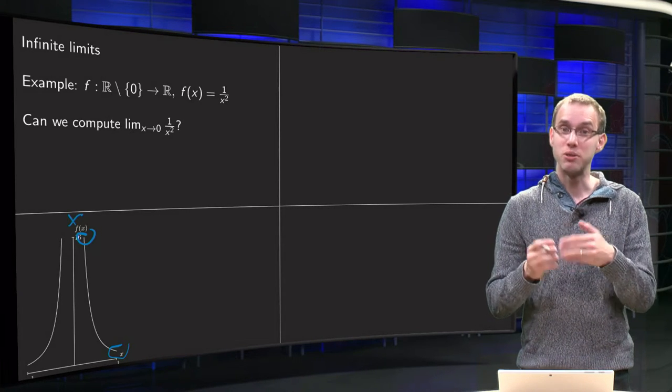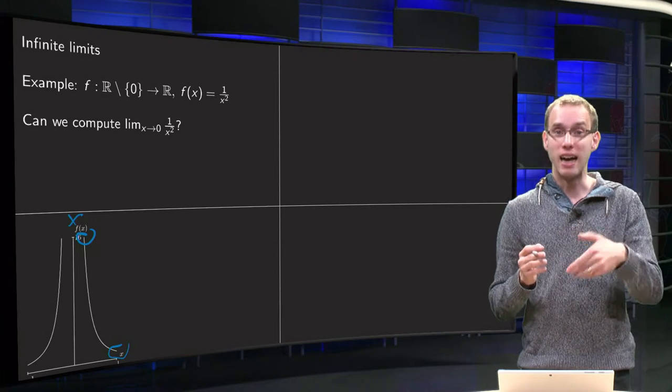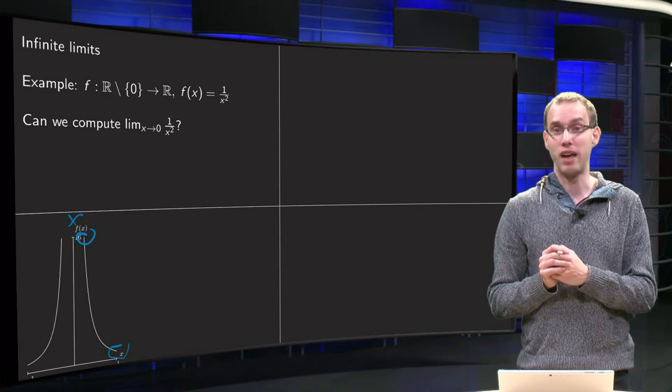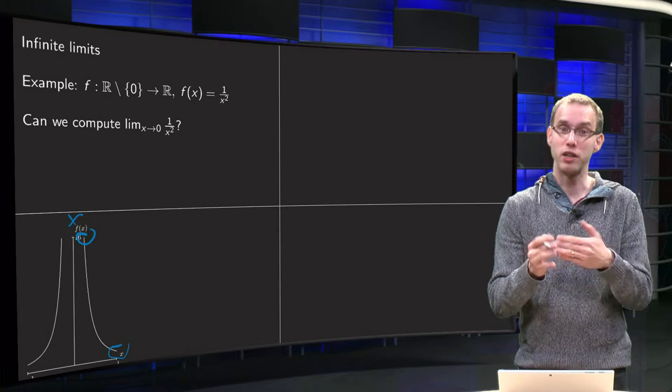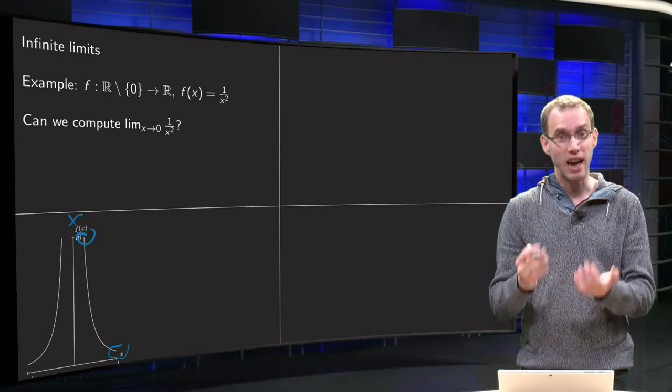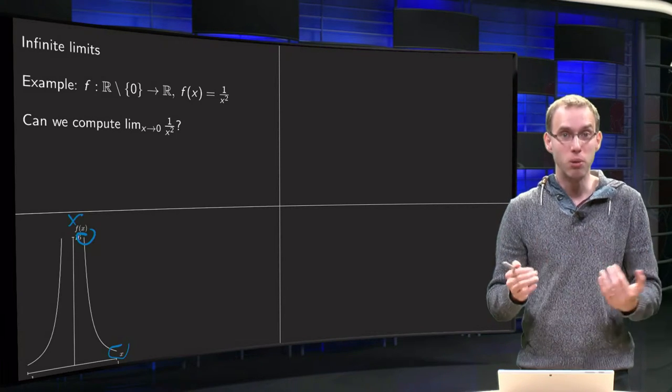What happens if we try to take x smaller and smaller, and then we will get higher and higher and higher with f of x, and we can get arbitrarily high with f of x by taking x smaller and smaller, by taking x arbitrarily small. And how do we denote this?